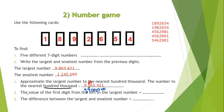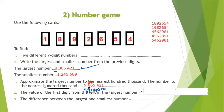Next: the value of the first digit from the left in the largest number 9,865,421. The first digit from the left is 9. Its value is 9,000,000.